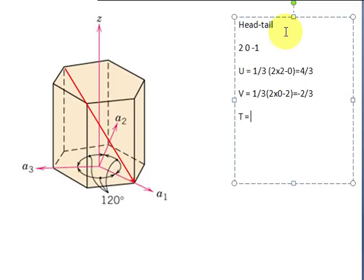T is equal to minus U, which is 4/3, plus V, which is minus 2/3. So, in other words, it is 4/3 plus minus 2/3, and this answer will give minus 2/3.